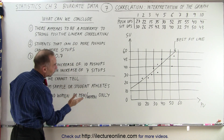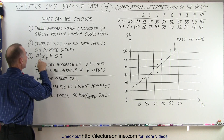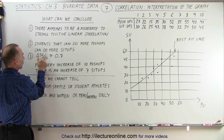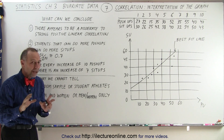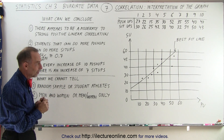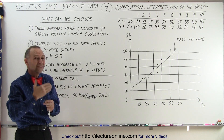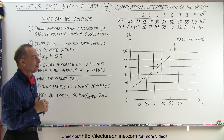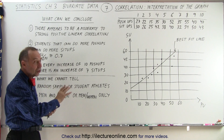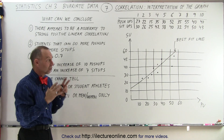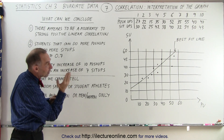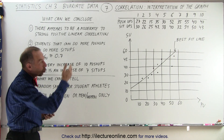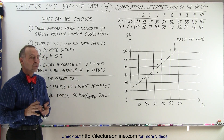We can also see, based upon the slope of that line — the rise over the run — that the change in sit-ups versus the change in push-ups is about 0.7 on that graph. So if a student can do 10 more push-ups, they can probably do about 7 more sit-ups. You can see that there's a lot to be gained by drawing a scatter diagram, drawing a best-fit line, and then seeing what the correlation is between the two data sets.